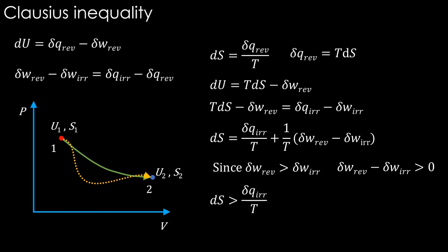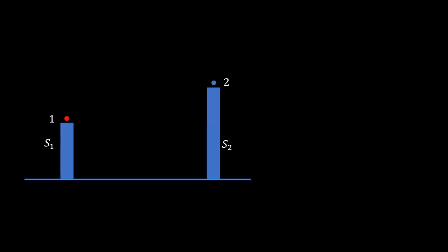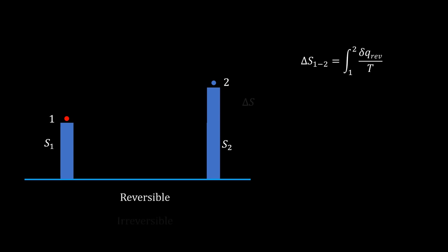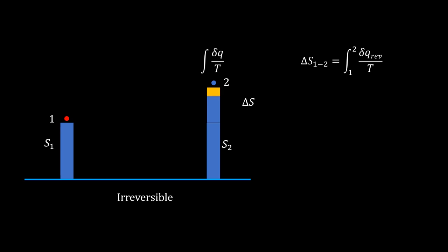Let's make it more concrete with a visualization. The entropy of states 1 and 2 are S1 and S2 respectively, so the entropy change ΔS is fixed. In the reversible process from state 1 to 2, the integral of δq/T equals ΔS. In the irreversible process, the integral of δq/T does not equal ΔS — the yellow portion of ΔS does not come from q/T. Therefore for an irreversible process, we can only write that ds is greater than or equal to δq/T.